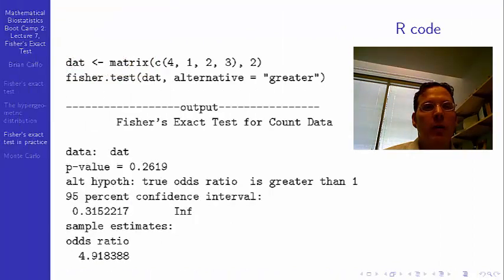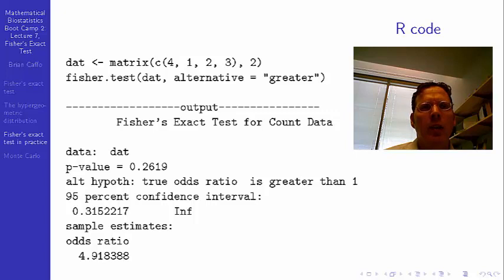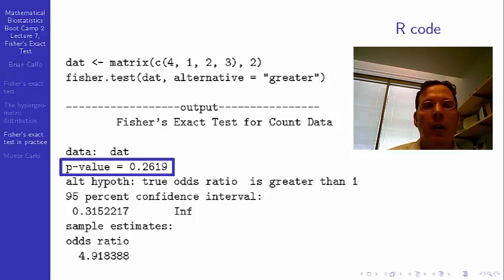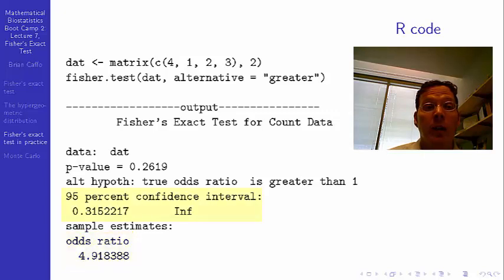Here's how to do this in R. Create the matrix with matrix(c(4,1,2,3), 2), assign it to dat, and double-check by typing dat. There is a function fisher.test in R's stats package that comes with the base installation. You call fisher.test(dat, alternative='greater') and get p = 0.2619, which matches our direct calculation. It also gives you an odds ratio estimate and a confidence interval, which a subsequent lecture will cover—it uses the non-central hypergeometric distribution.